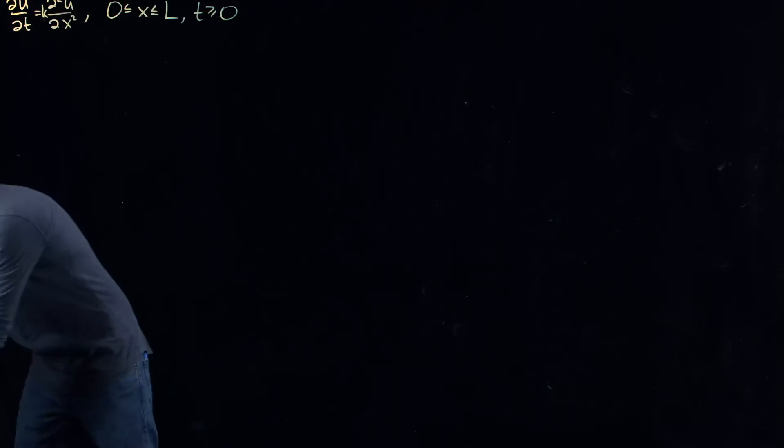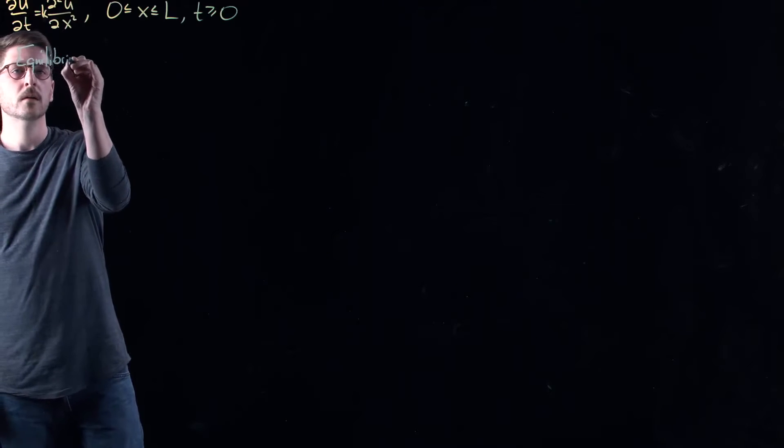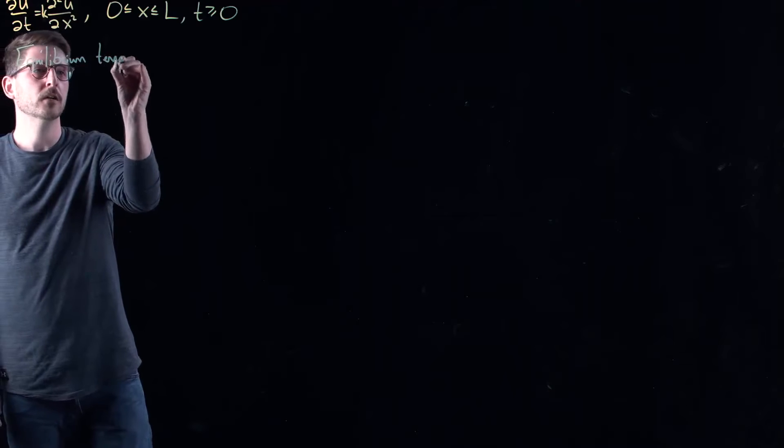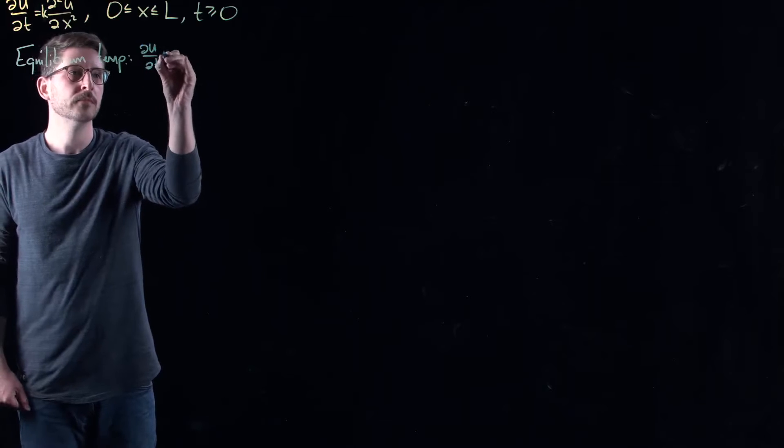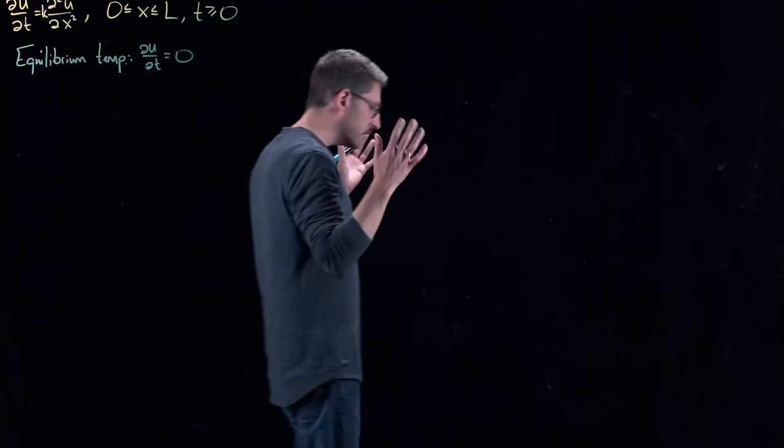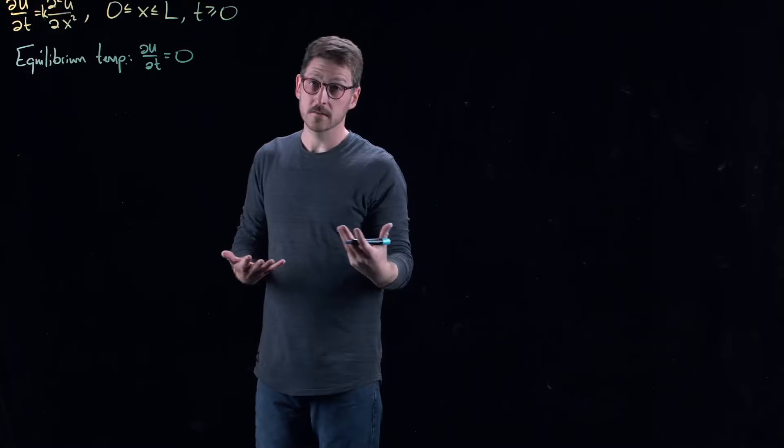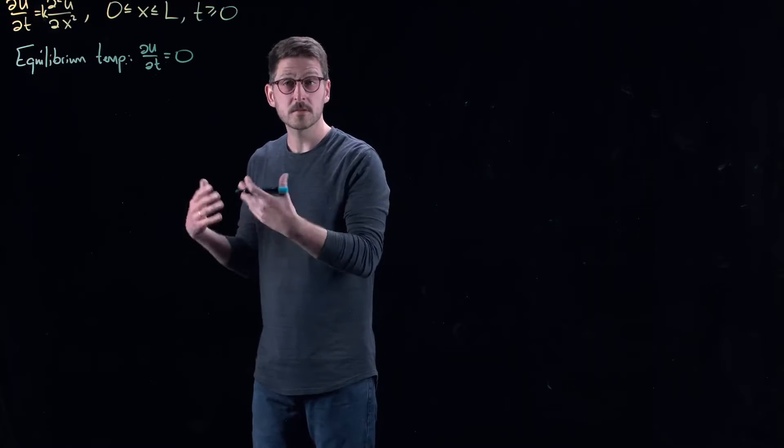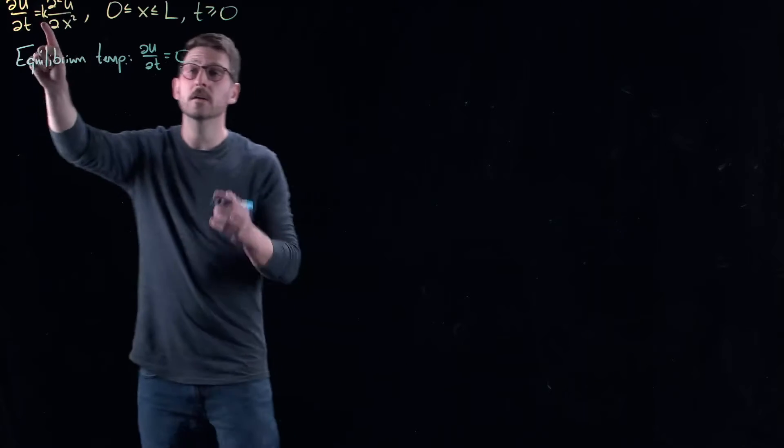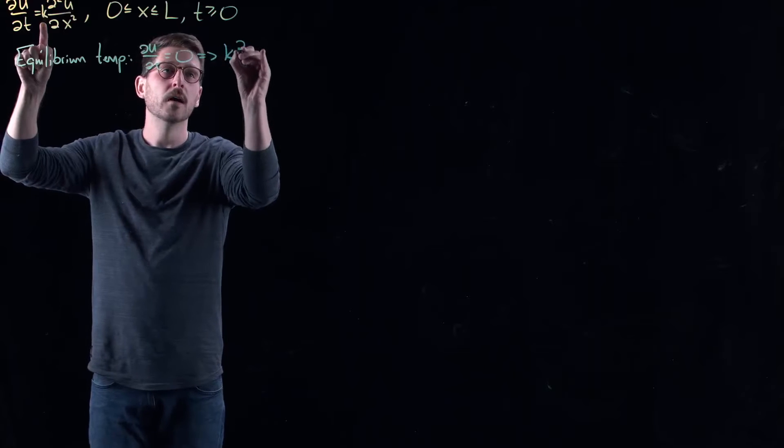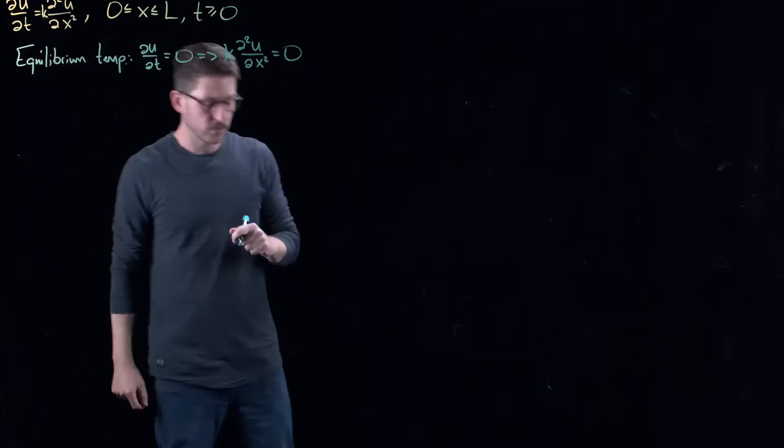Now what is an equilibrium solution? Well an equilibrium, in this case an equilibrium temperature, that's something that doesn't change in time. So it is a solution to the equation that is independent of time. Now saying it's independent of time does not mean it's constant, right? That was something that we saw in dynamical systems or ordinary differential equations. That's because there is only one independent variable. Here now, I get just a function of x, right? So I have an ordinary differential equation to solve.